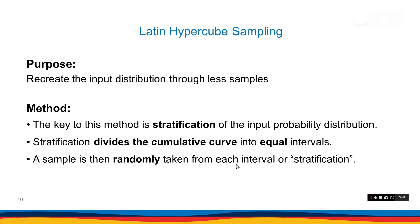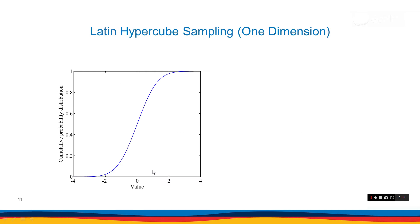The main idea behind this approach is a stratification of the probability distribution. By using stratification, we divide the cumulative curve into equal intervals and then we choose one sample inside each stratification. Just one sample inside each stratification.